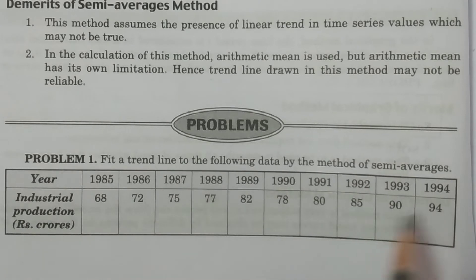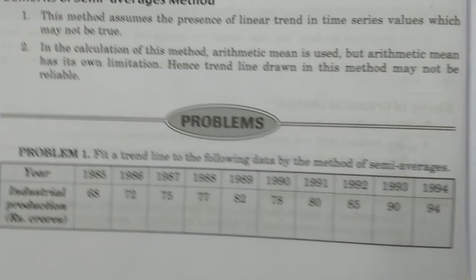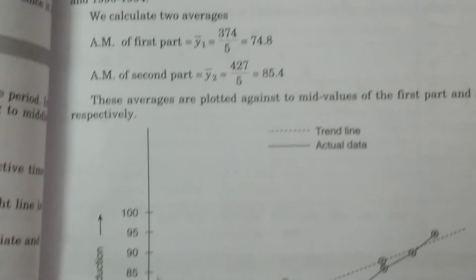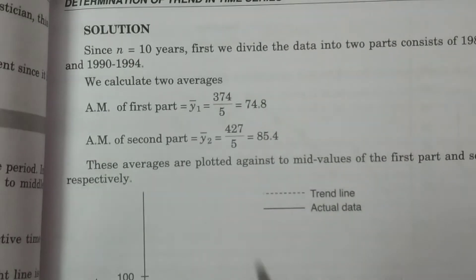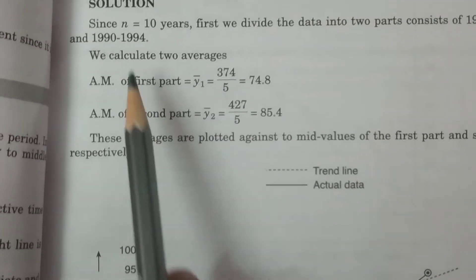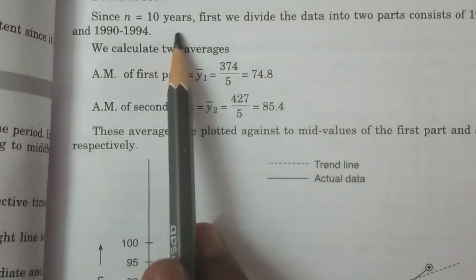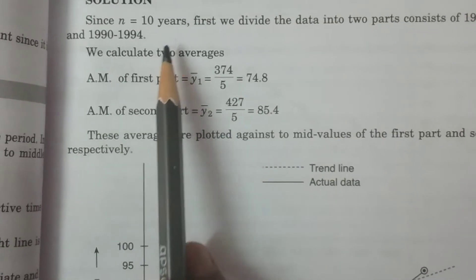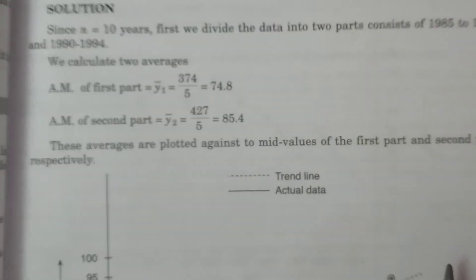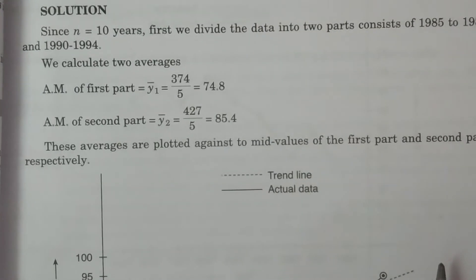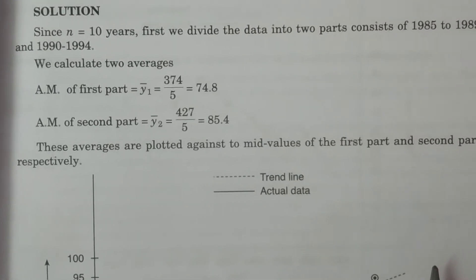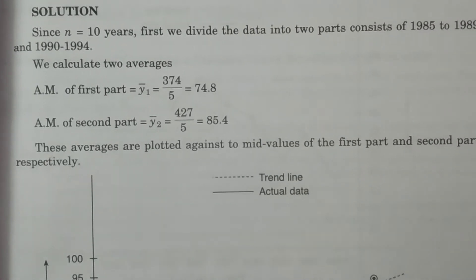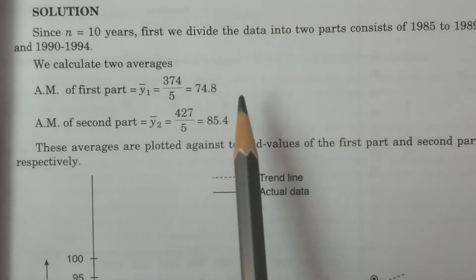There are 10 periods, so we divide into five and five periods. This is the solution. Since n is equal to 10 years, first of all we have to divide the total data into two particular parts.